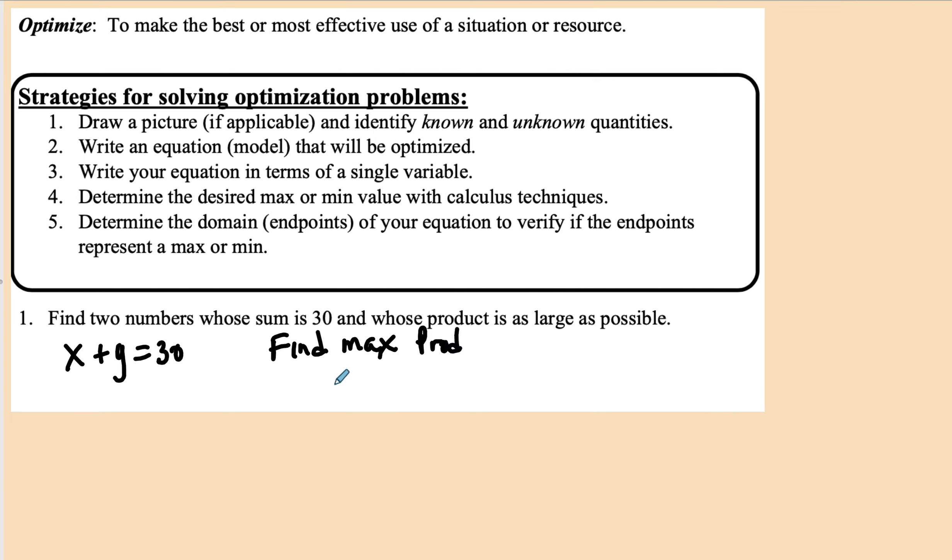Now the maximum product is P = x times y. Now we know that we have two variables here, so let's see if we can get it into one variable. Y will be equal to 30 minus x. So this is going to be x times (30 - x), or 30x - x².